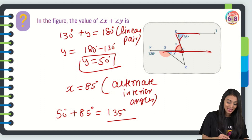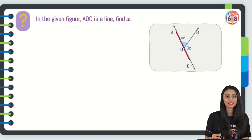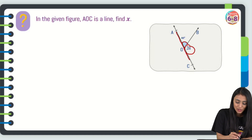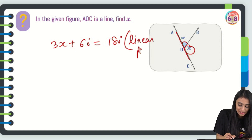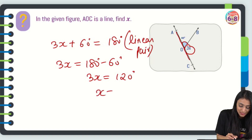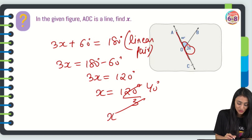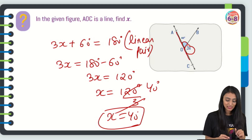Next question: In the given figure, AOC is a line — find X. You can see 3X and 60 degrees on a straight line. Since it's a linear pair, their sum is 180 degrees: 3X = 180 − 60 = 120 degrees, so X = 120 ÷ 3 = 40 degrees.